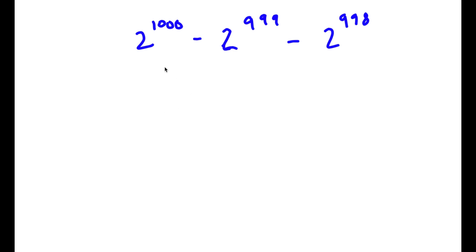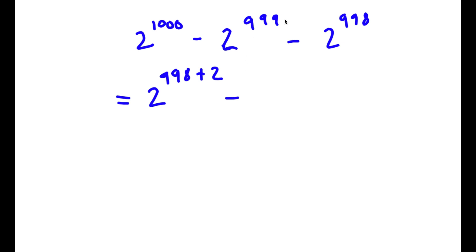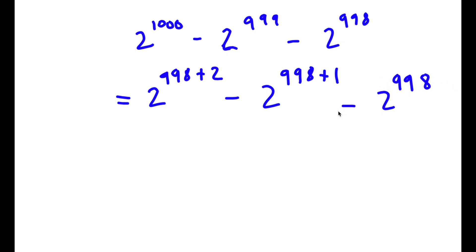In this problem, I have 2 to the power of 1000 minus 2 to the power of 999 minus 2 to the power of 998. To solve this, I'm going to start by rewriting 2 to the power of 1000 as 2 to the power of 998 plus 2, 2 to the power of 999 as 2 to the power of 998 plus 1, and I'm going to keep 2 to the power of 998 as is.